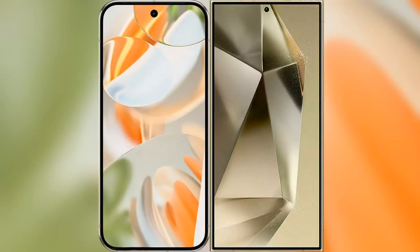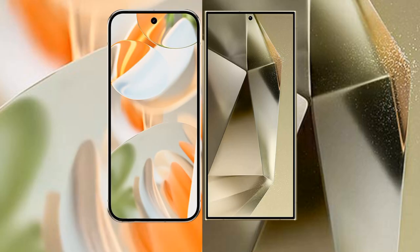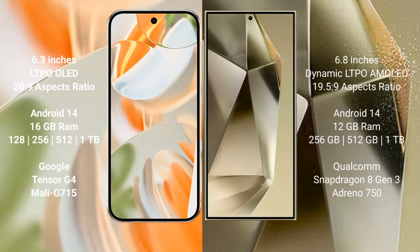I will compare the new Google Pixel 9 Pro with Samsung Galaxy S24 Ultra. Google Pixel 9 Pro features a 6.3-inch LTPO OLED display at a 20:9 aspect ratio. Samsung Galaxy S24 Ultra features a 6.8-inch Dynamic LTPO AMOLED display at a 19.5:9 aspect ratio.